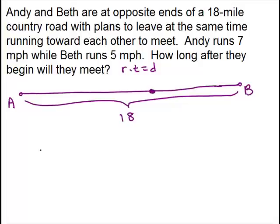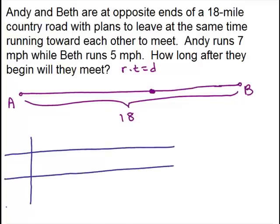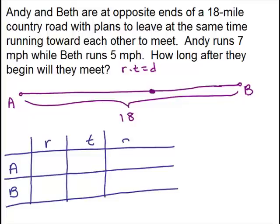Now we want to put some information in a chart to keep track of their rate and their time and their distance. So we have Andy and Beth, rate, time, and distance.